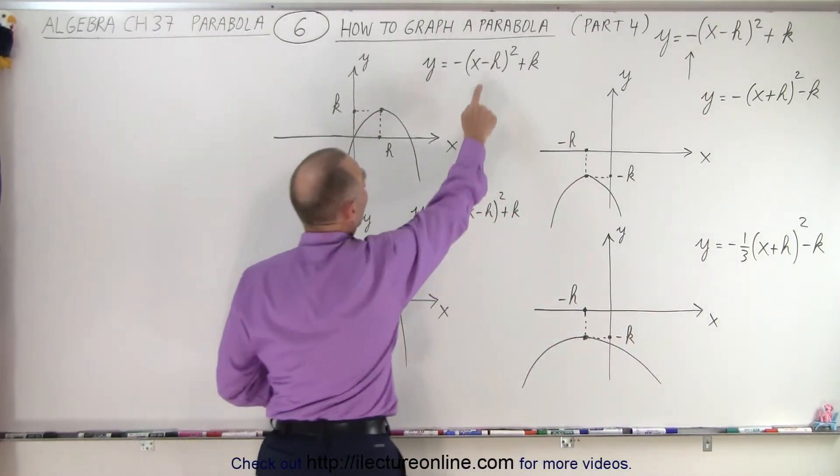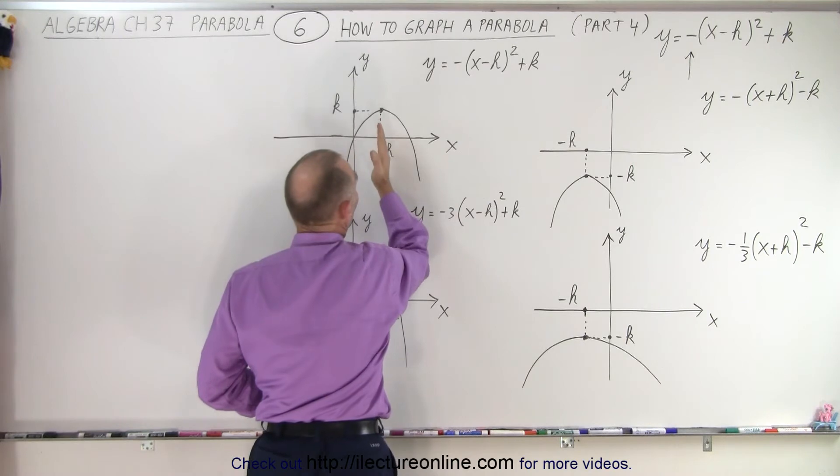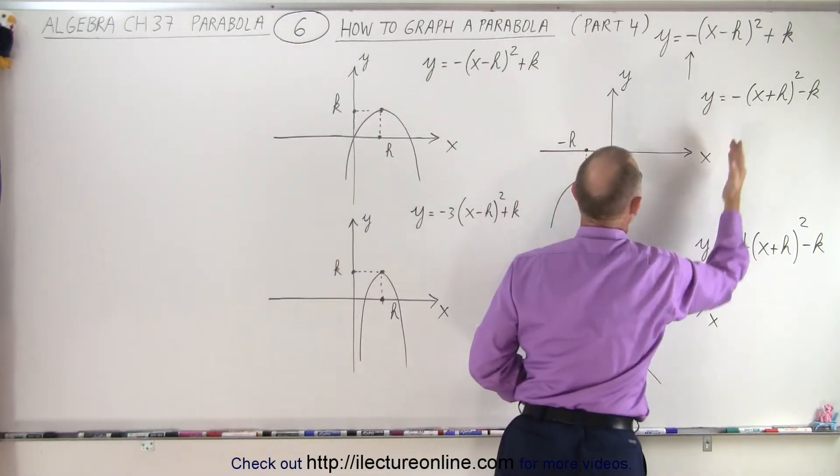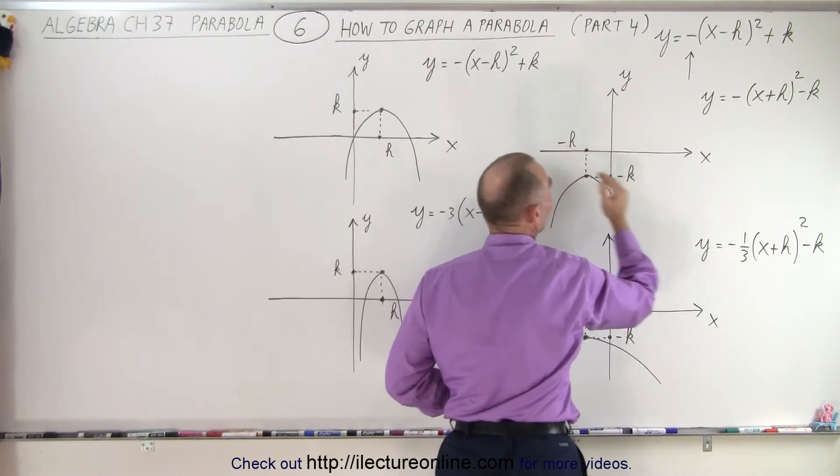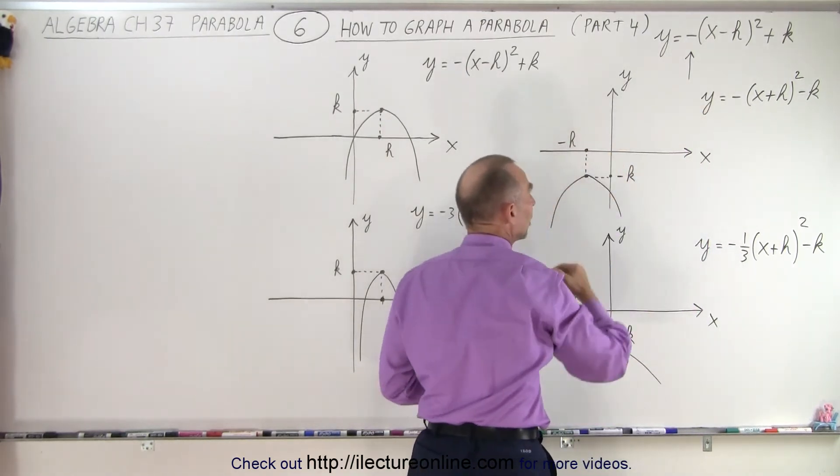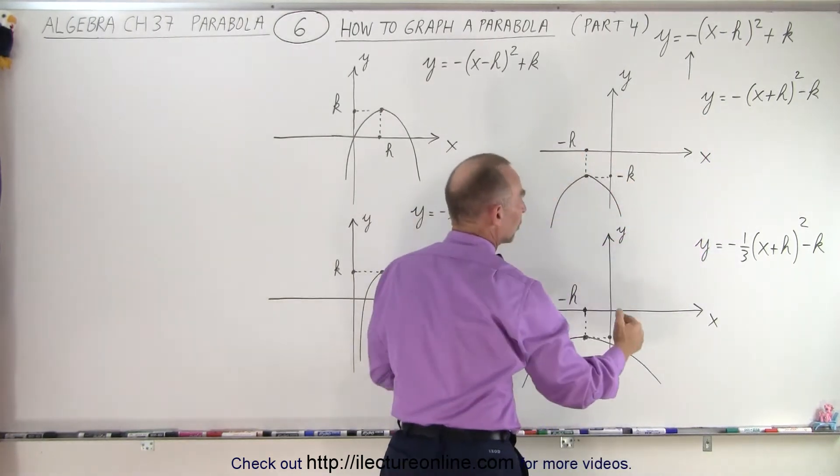So again, minus H means the parabola moves to the right, plus K means it moves up, plus H means that the parabola moves to the left, minus K means the parabola moves down. A minus in front means the parabola opens downward.